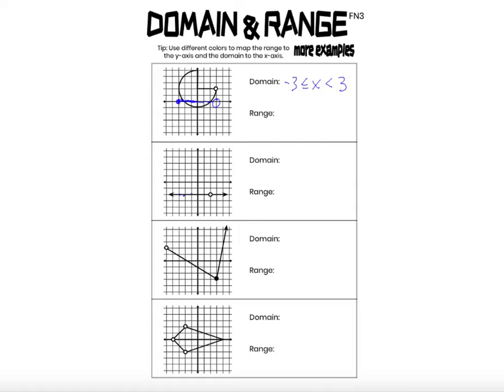Let's do the range in a different color. The smallest possible value of the range — the smallest y-coordinate on this graph — is negative 1. There's one point with a y-coordinate of negative 1. The largest y-coordinate on this graph is 5, and y can be anything in between those two values. So negative 1 ≤ y ≤ 5.